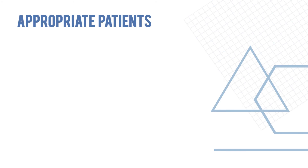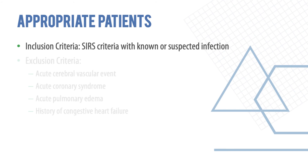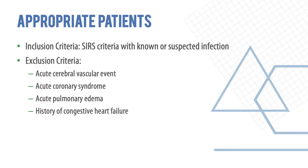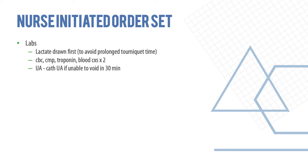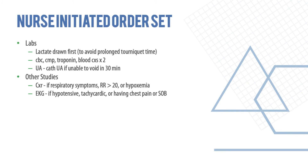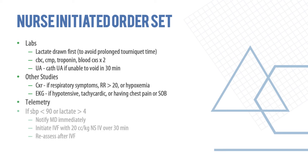Appropriate patients are included based on suspected infection. Exclusion criteria include acute cerebrovascular accident, acute coronary syndrome, pulmonary edema, or a history of congestive heart failure. The nurse-initiated order set includes labs: lactate, complete blood count, blood cultures, and urinalysis — obtained via catheter if the patient cannot void. A chest X-ray and ECG are also part of the basic workup. If systolic blood pressure is less than 90 or lactate is more than 4, the consultant should be notified immediately, IV fluids initiated, and the patient reassessed.